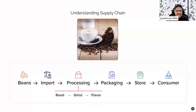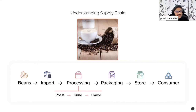A supply chain is nothing but everything that takes place between the raw produce — the raw products — to a packaged product that reaches the consumer. Here I want to take the example of coffee, which is one of my favorite beverages. If you really look at the process that takes place all the way from collecting the beans till it is packaged and delivered to you to make a delicious cup of coffee, there are multiple stages.